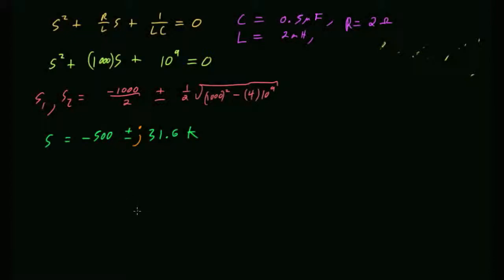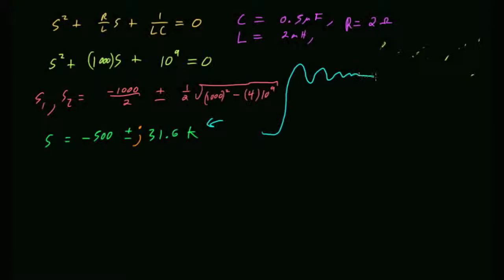Many calculators have a built-in polynomial root solver — you just type in the coefficients and it gives you the roots. You should find that function and write it down. With complex roots confirmed, the step response will be oscillatory.